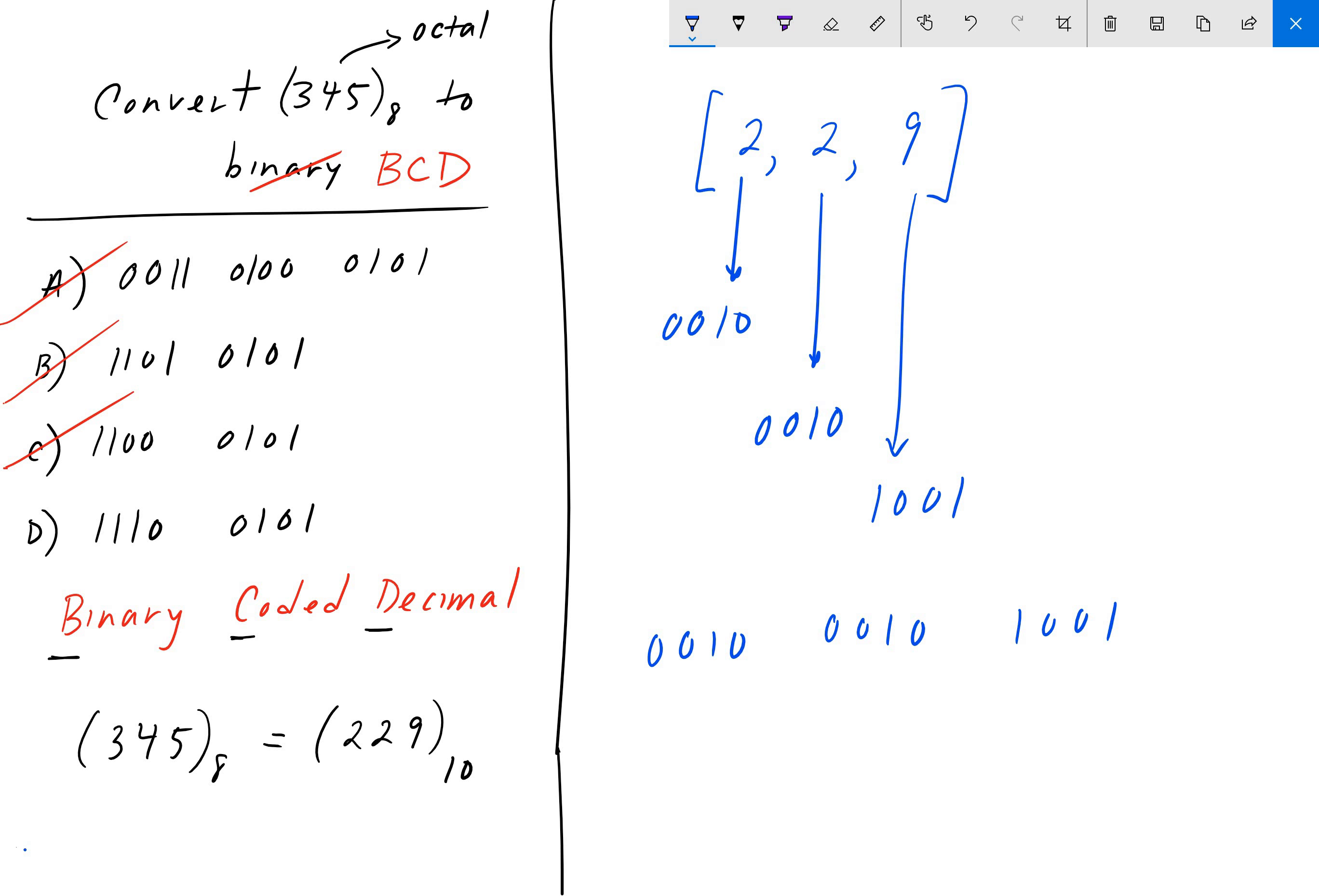And so that is the BCD equivalent of 229 decimal and the binary BCD equivalent of 345 octal. Okay, so that's BCD.